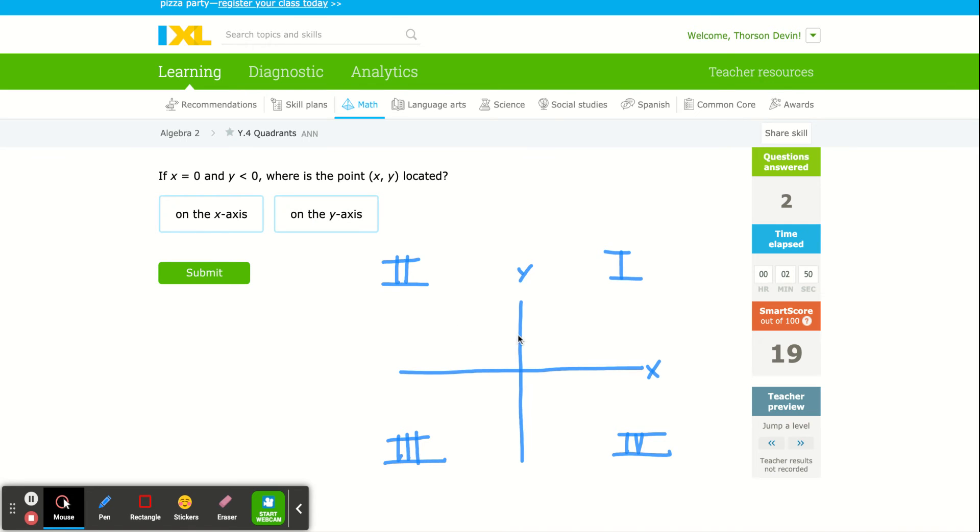If X is equal to zero, I'm not moving left or right. I'm on the Y axis. I'm down below because Y is less than zero. So I'm down here somewhere on the Y axis.